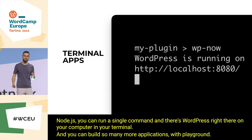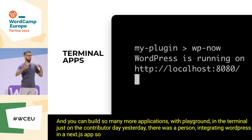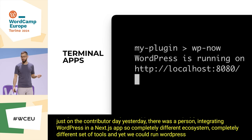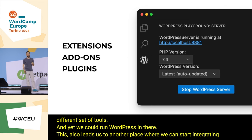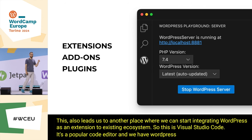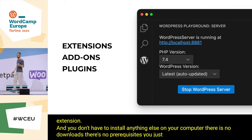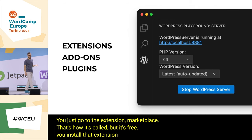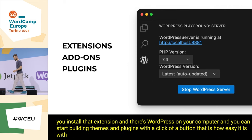You can build so many more applications with playground in the terminal. Just yesterday at the contributor day there was a person integrating WordPress in a Next.js app — a completely different ecosystem and yet we could run WordPress there. This also leads to integrating WordPress as an extension to existing ecosystems. This is Visual Studio Code — a popular code editor — and we have WordPress running in there as an extension. No downloads, no prerequisites. You just go to the extensions marketplace, install that extension, and there's WordPress. You can start building themes and plugins with a click.